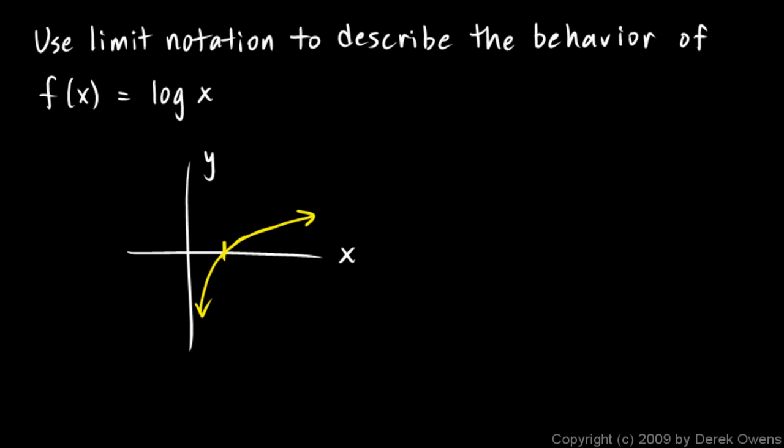It grows, and as you go further to the right it grows at a slower and slower rate, but it continues to grow. And so we can describe the behavior here and out here with limit notation.